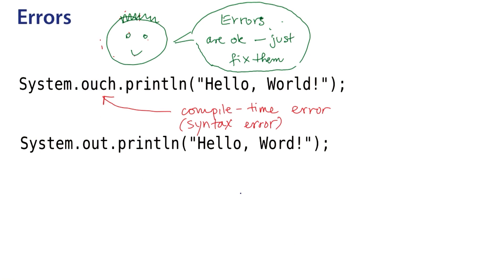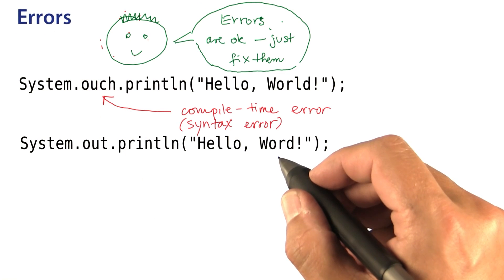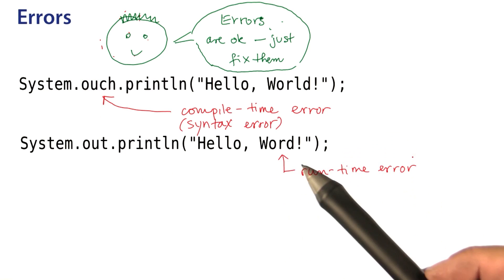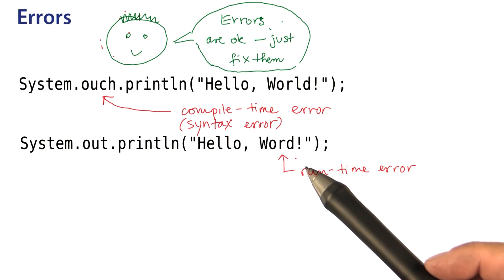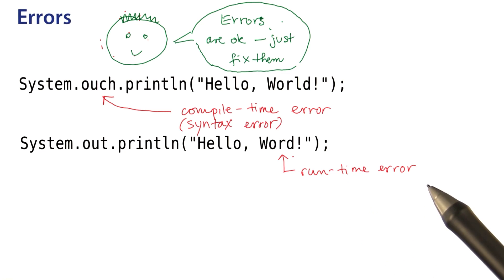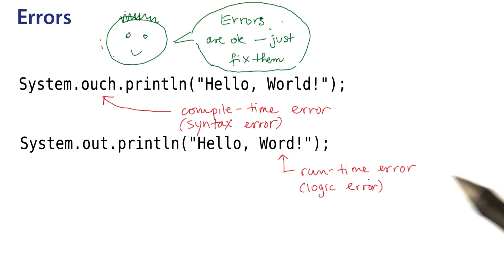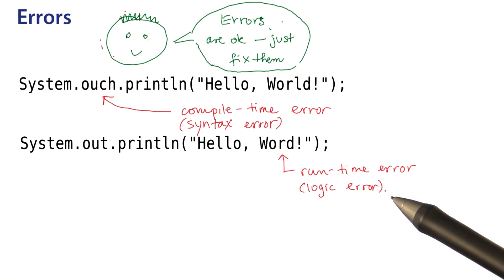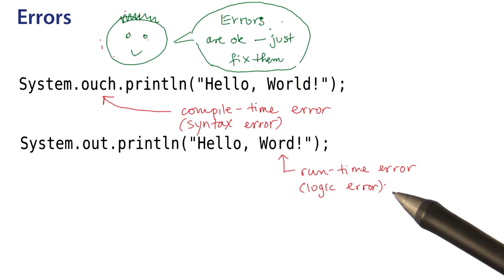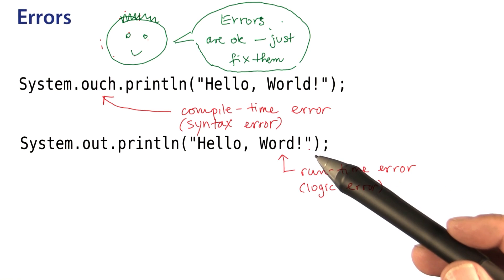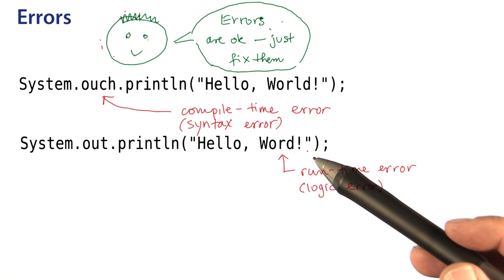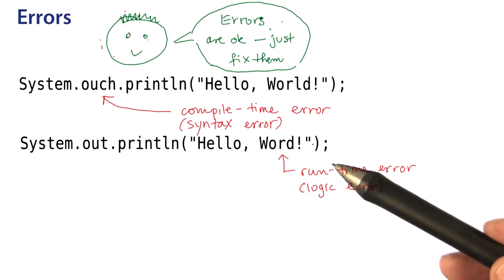When a program compiles and runs but then prints the wrong value — if it produces the wrong output — that's called a runtime error. Some people call it a logic error because there's something wrong with the logic of the program, not just its syntax.